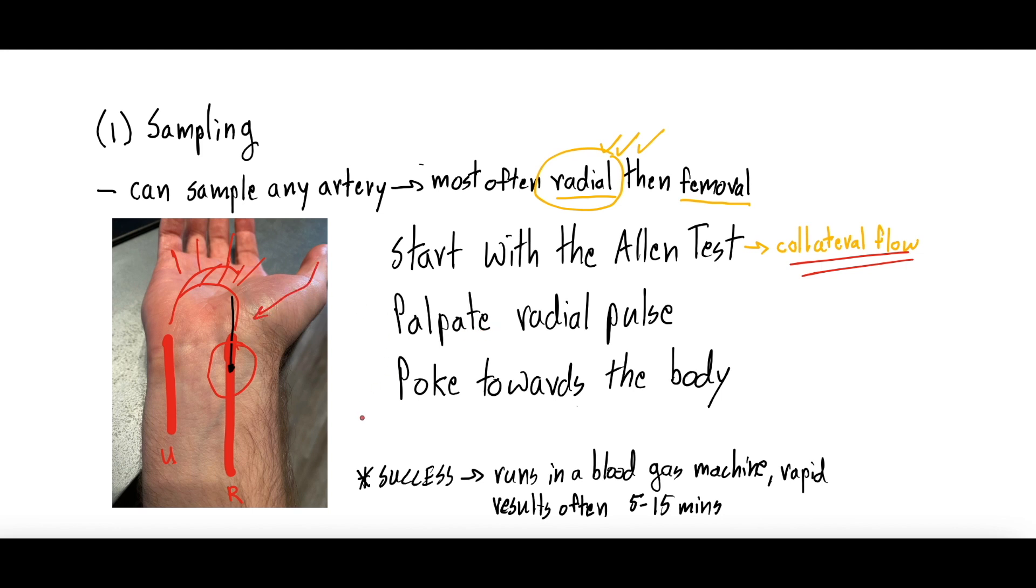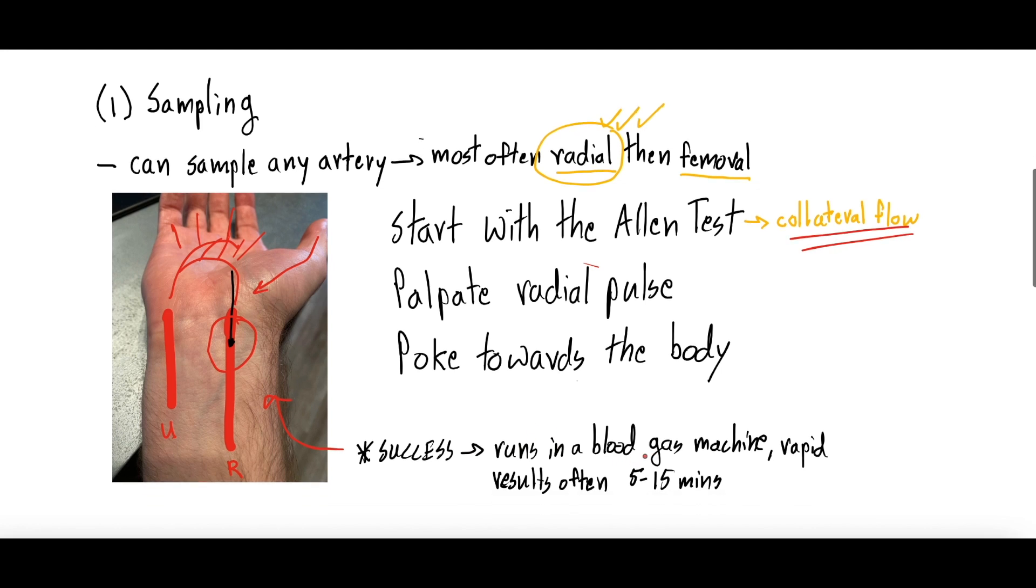Once you have a good radial pulse - and we're not going to go through the details of exactly how to do the poke, we can let us know in the comments if you want us to make that video - you poke with a blood gas syringe, which is a certain type of syringe, that artery, and you're always poking in this direction towards the body. You had success, you did a good poke, you got the ABG.